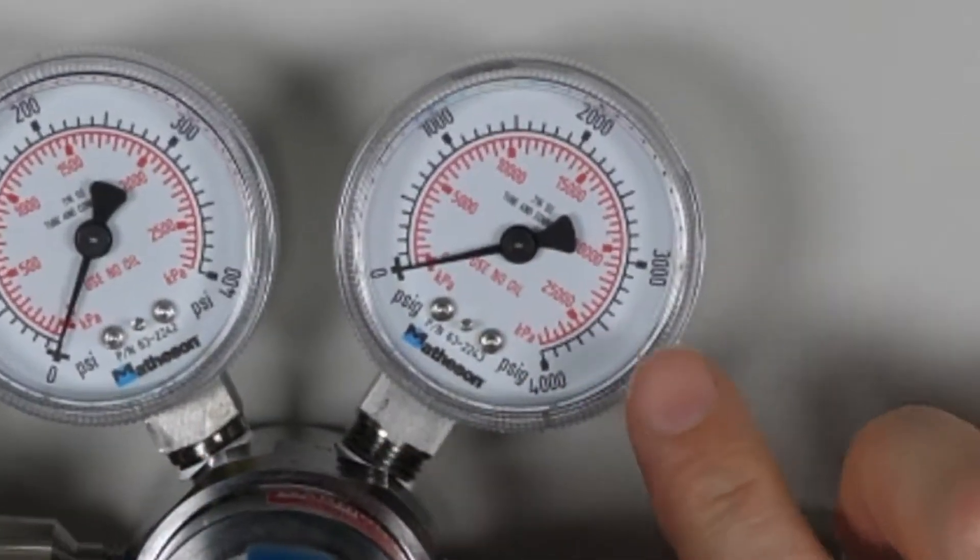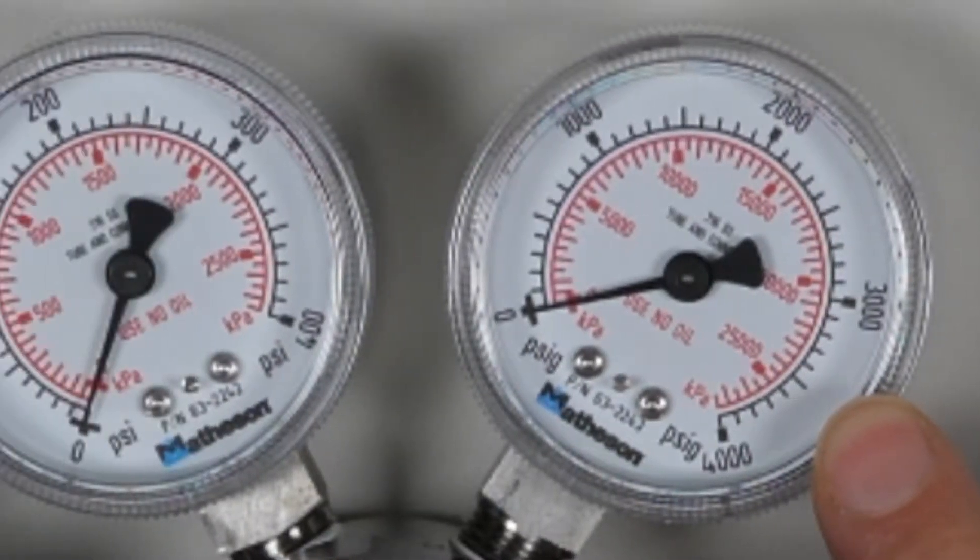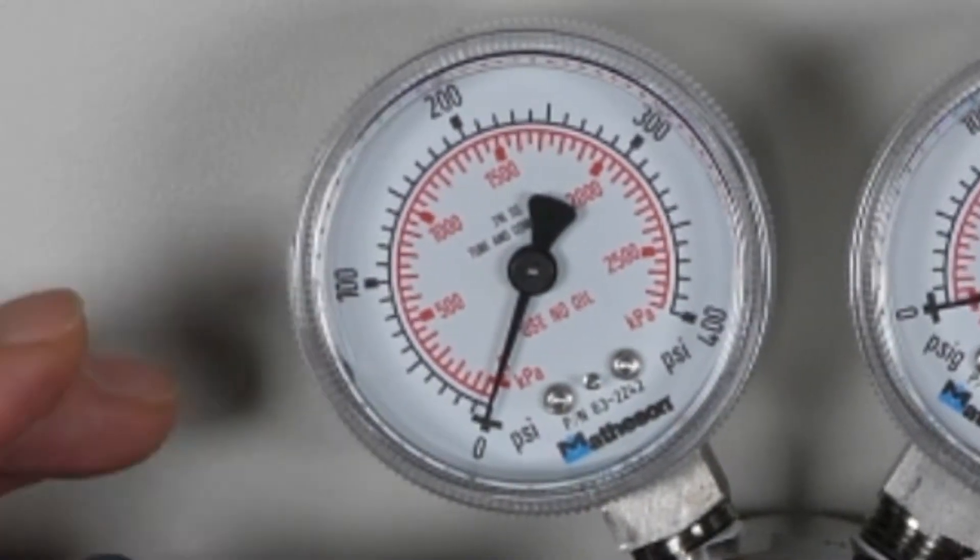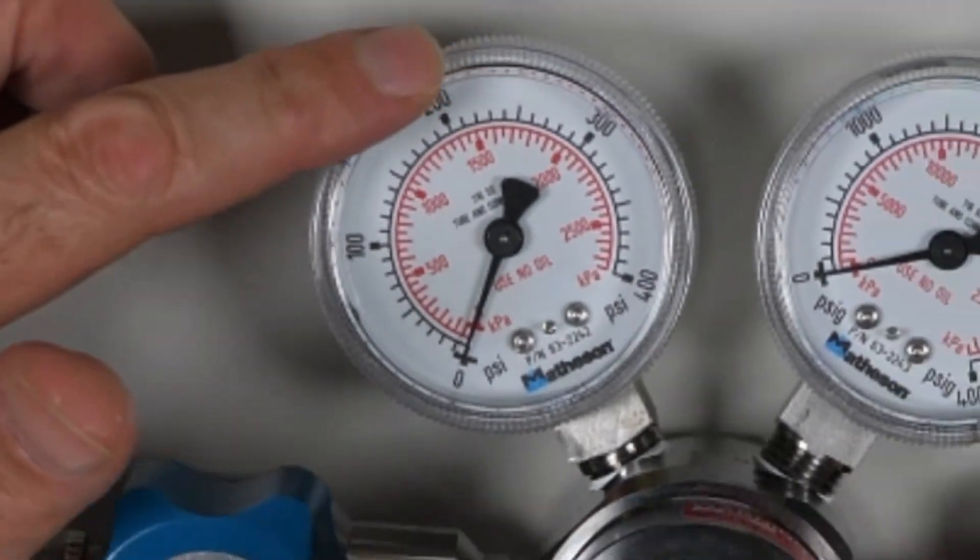Cylinder gauges are normally 3,000 or 4,000 psi. The maximum delivery pressure is typically in the middle range of the delivery pressure gauge.